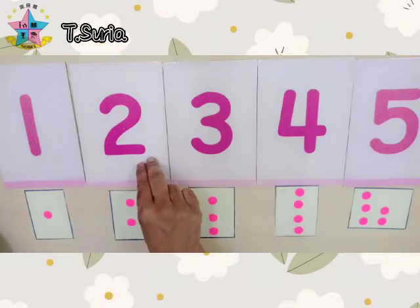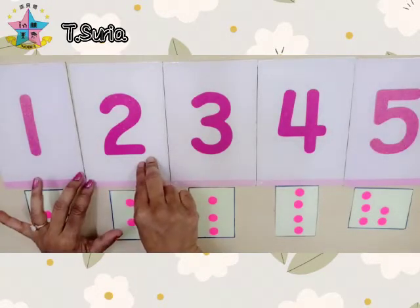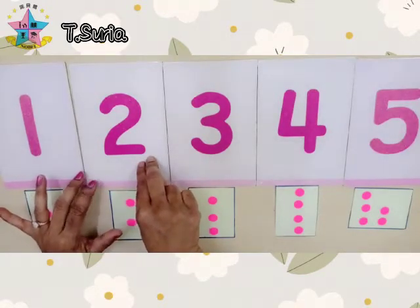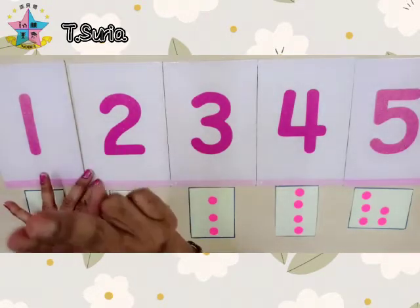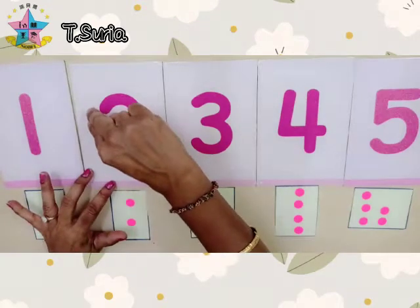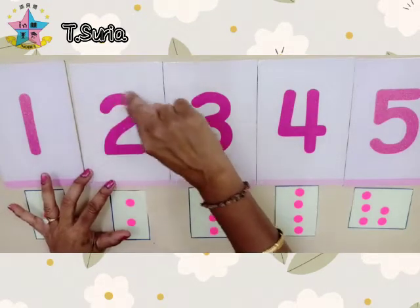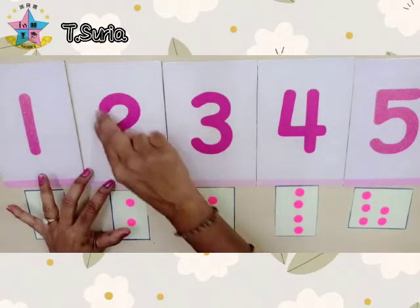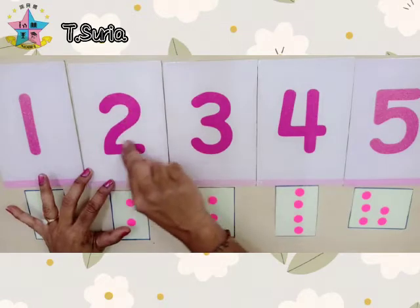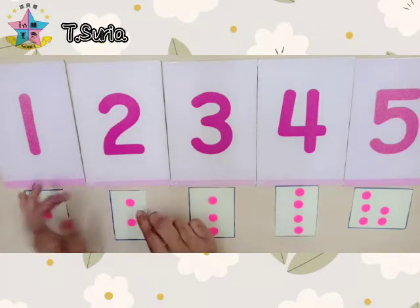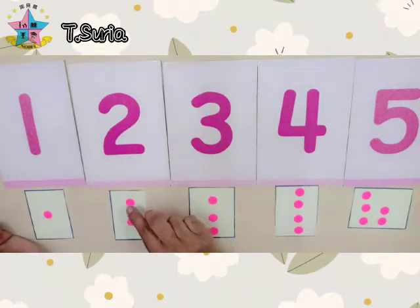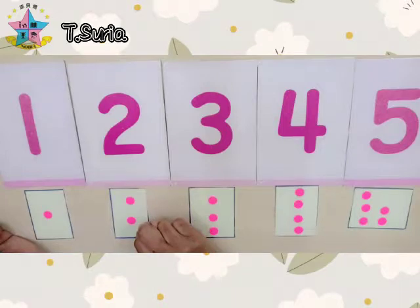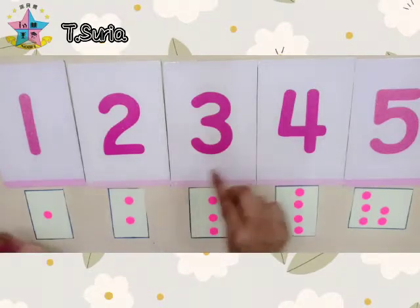What number is this? Number two. So, let's take two fingers and trace number two. Two, two, two. This is the object for number two. One, two. One, two.